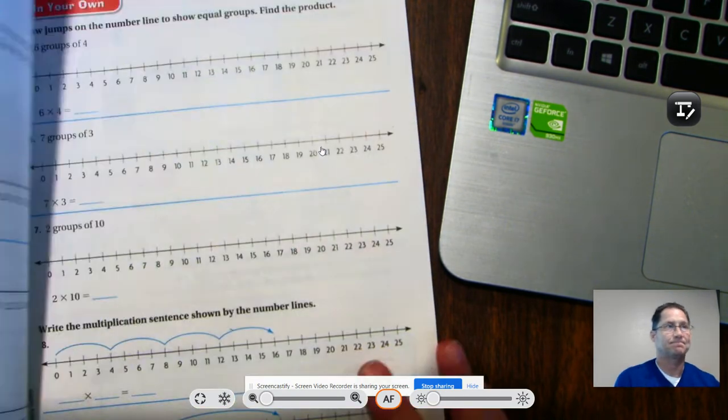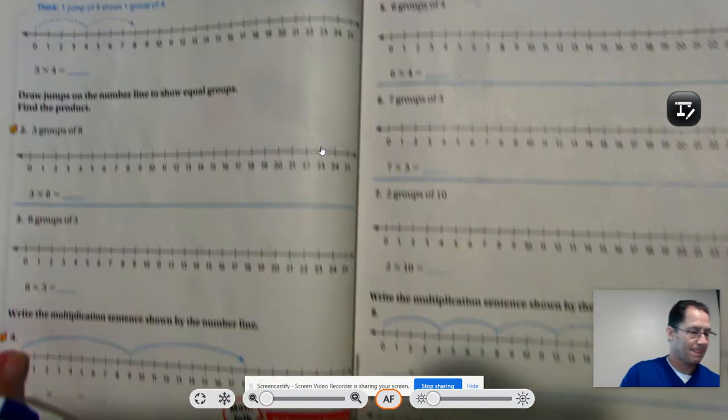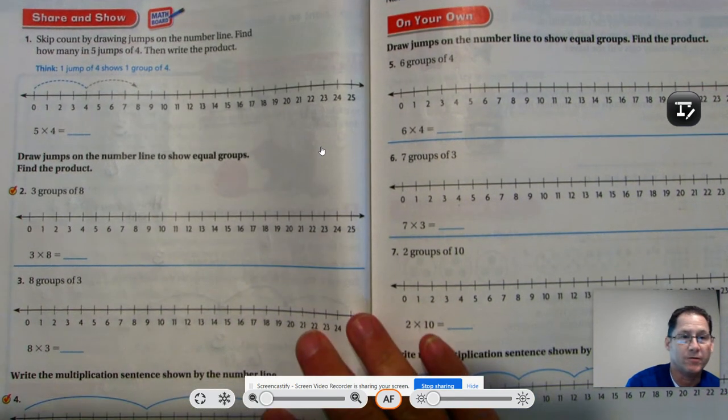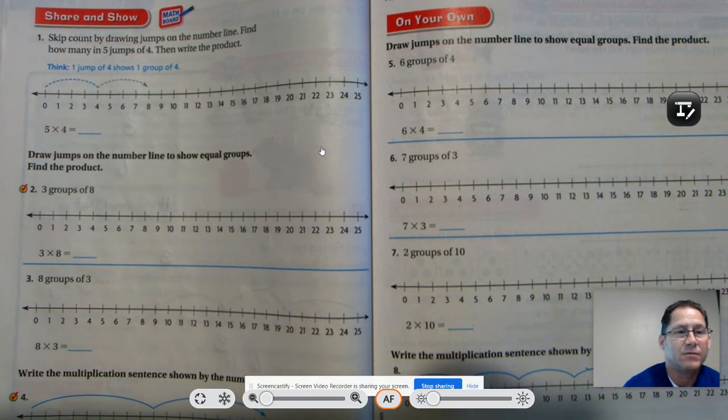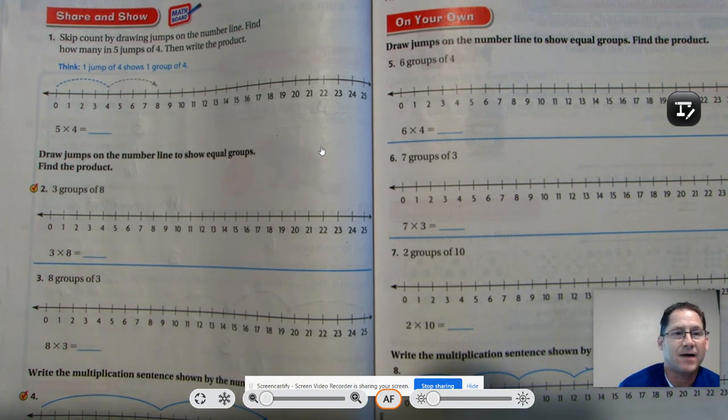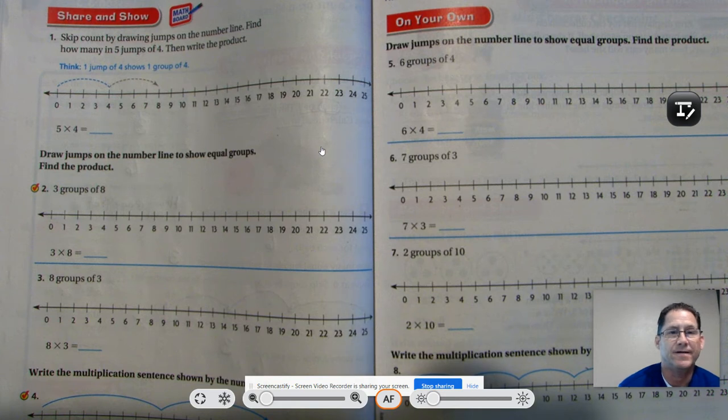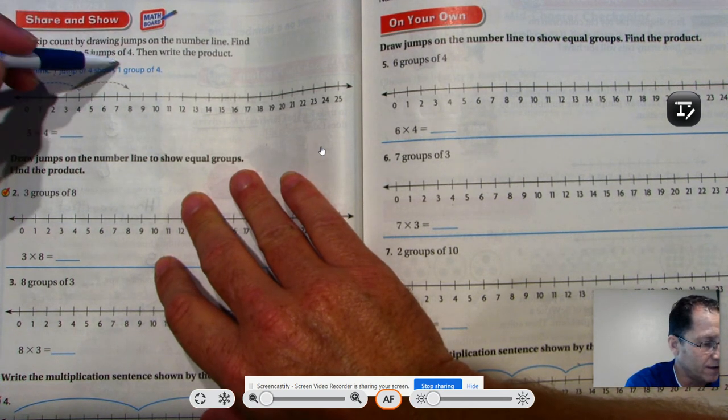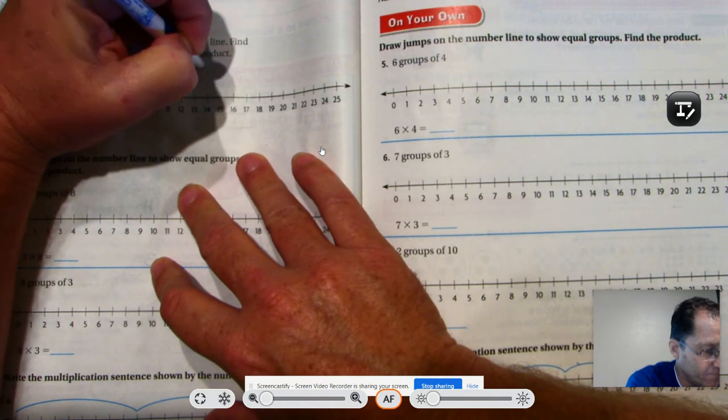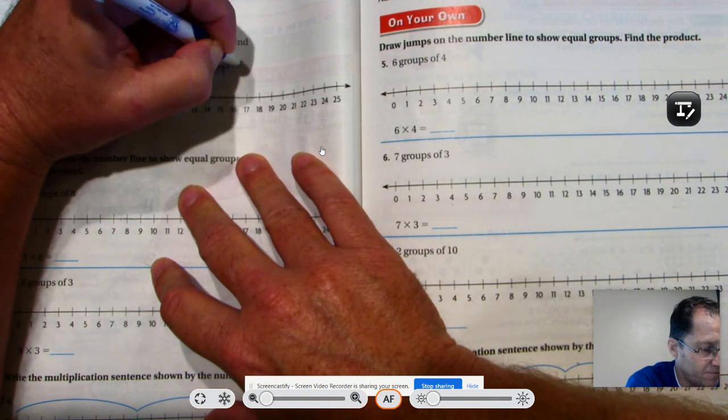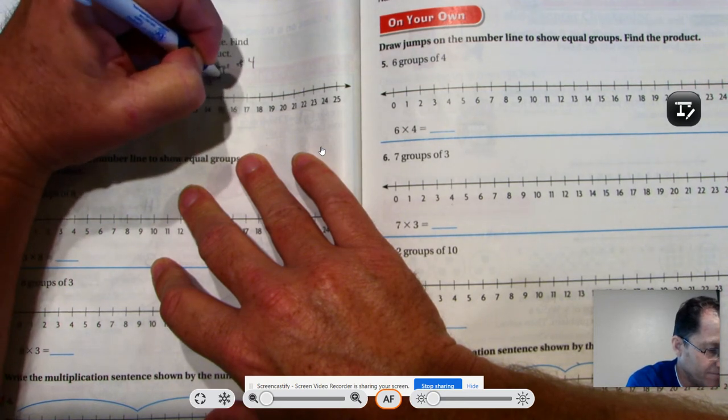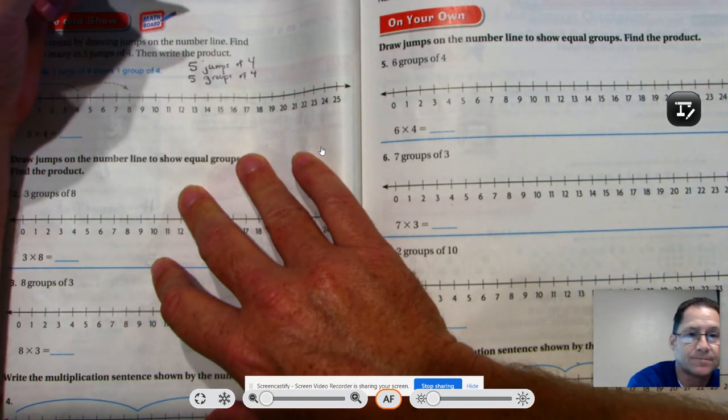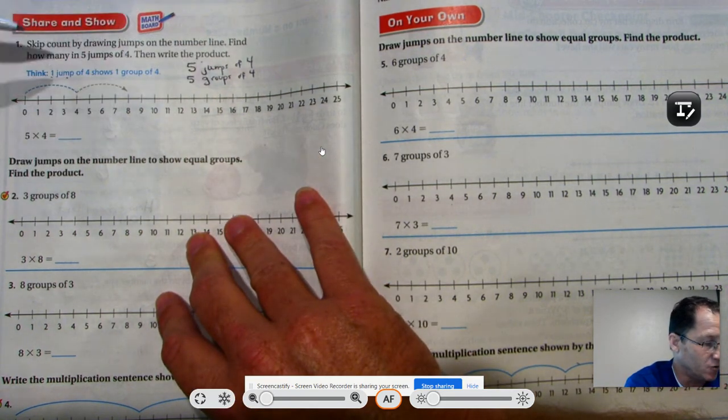Let's move on to page 110. And on the next two pages, we see a bunch of number lines. So we know that we're going to be practicing skip counting on number line. And number one says skip count by drawing jumps on the number line and find how many in five jumps of four. So when we say five jumps of four, think of one jump of four showing one group of four. So when we say five jumps of four, the same thing as what we talked about yesterday as being five groups of four.